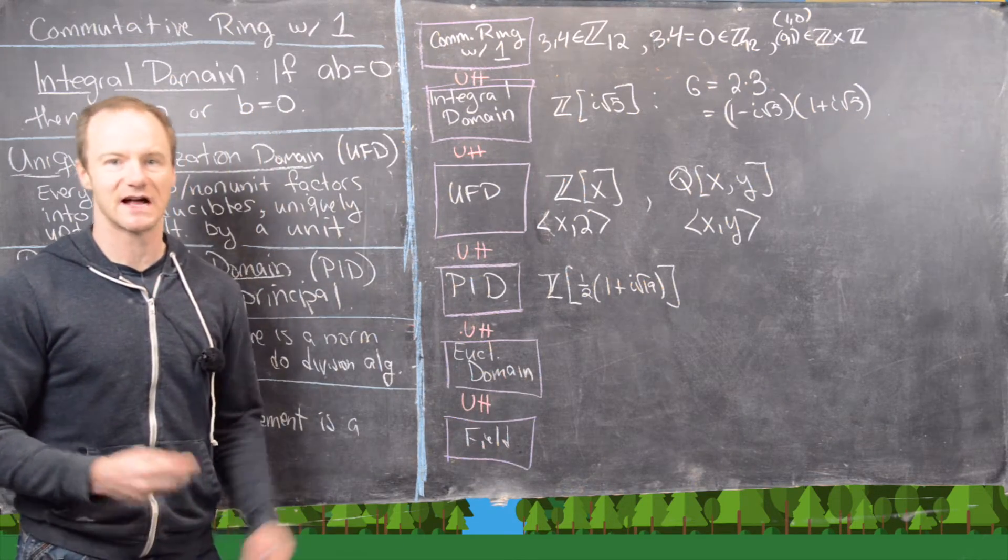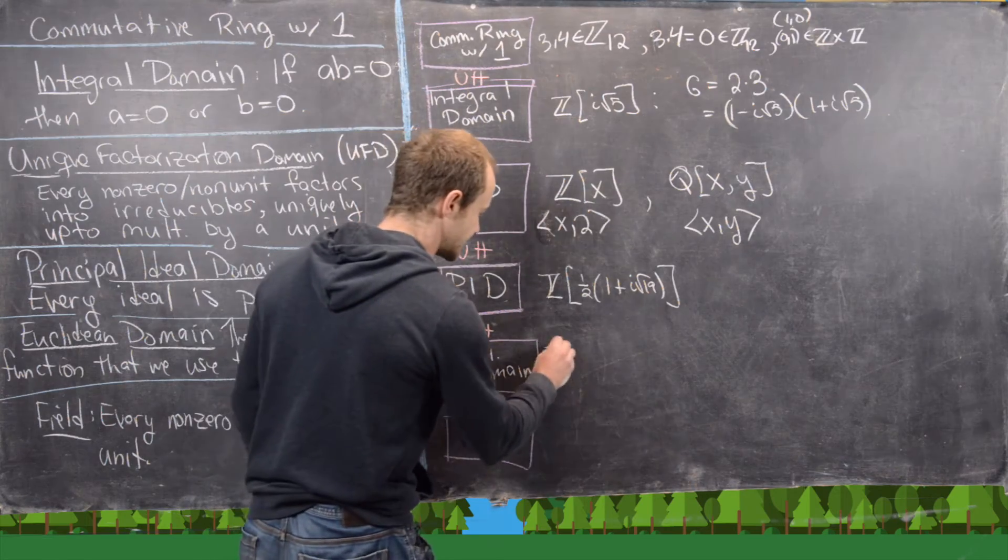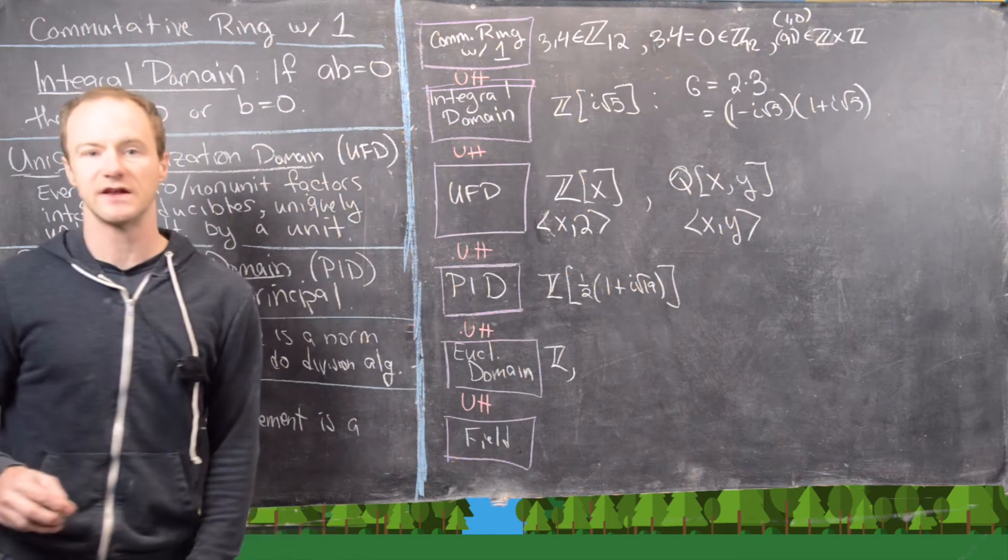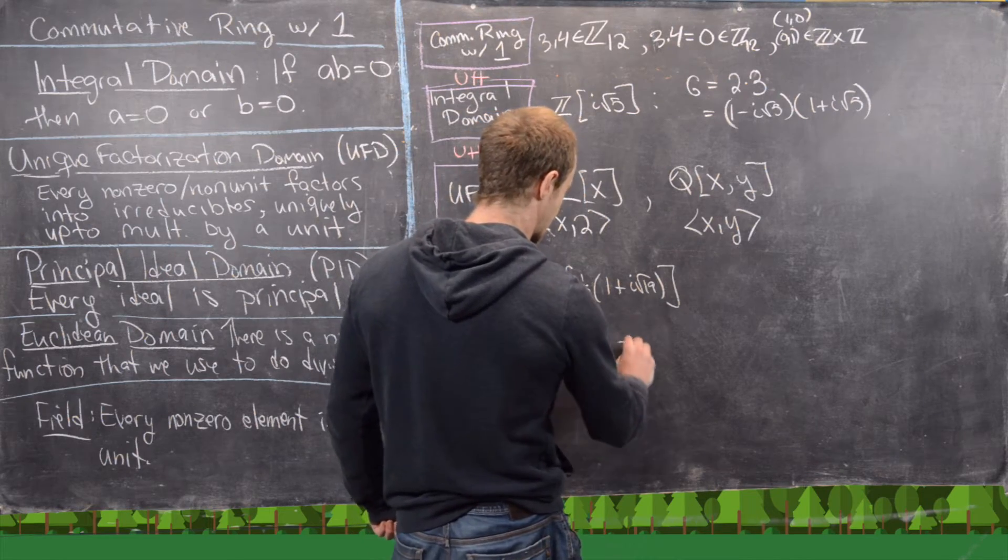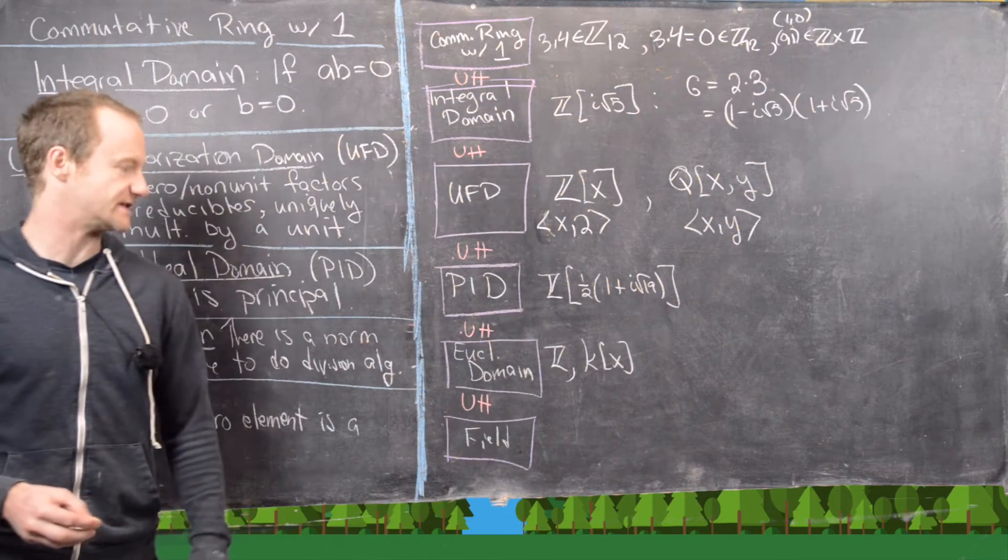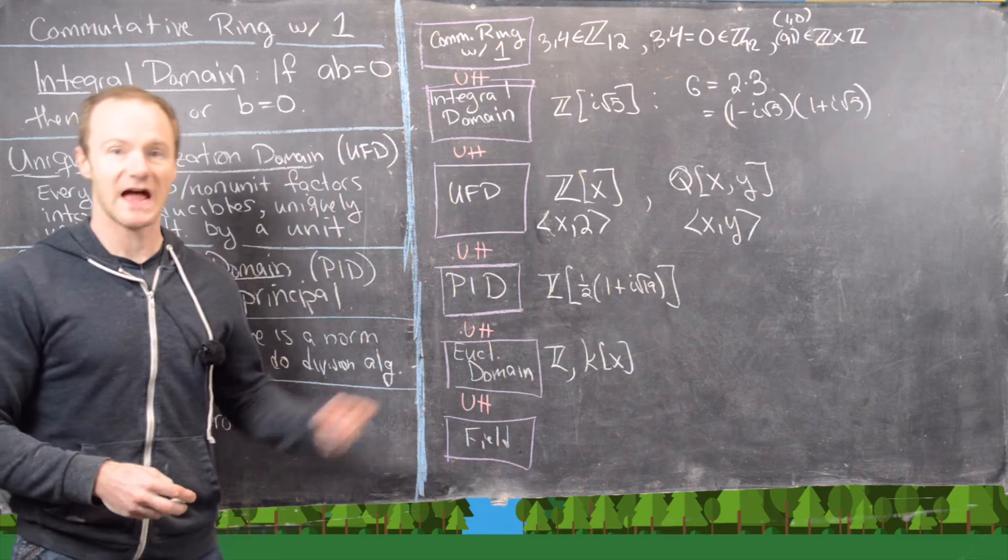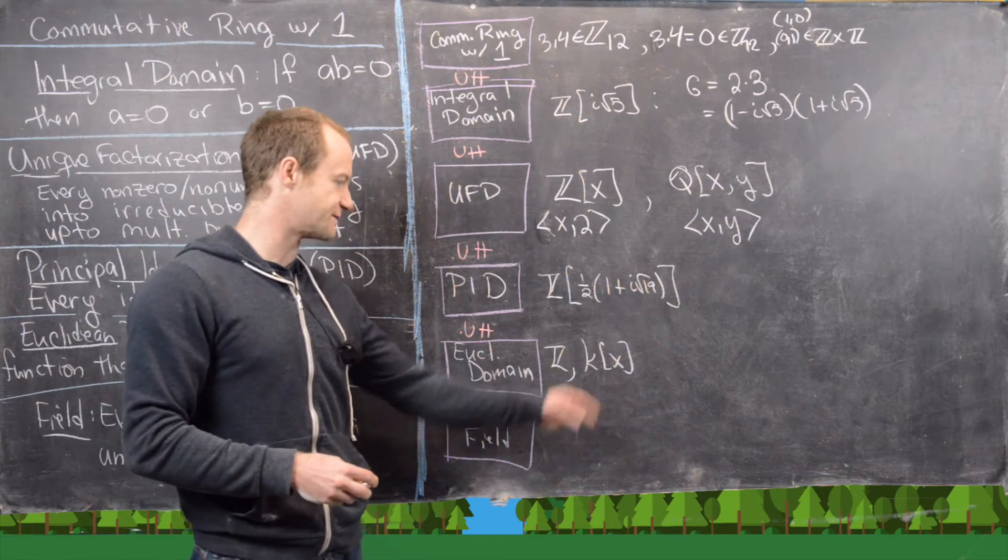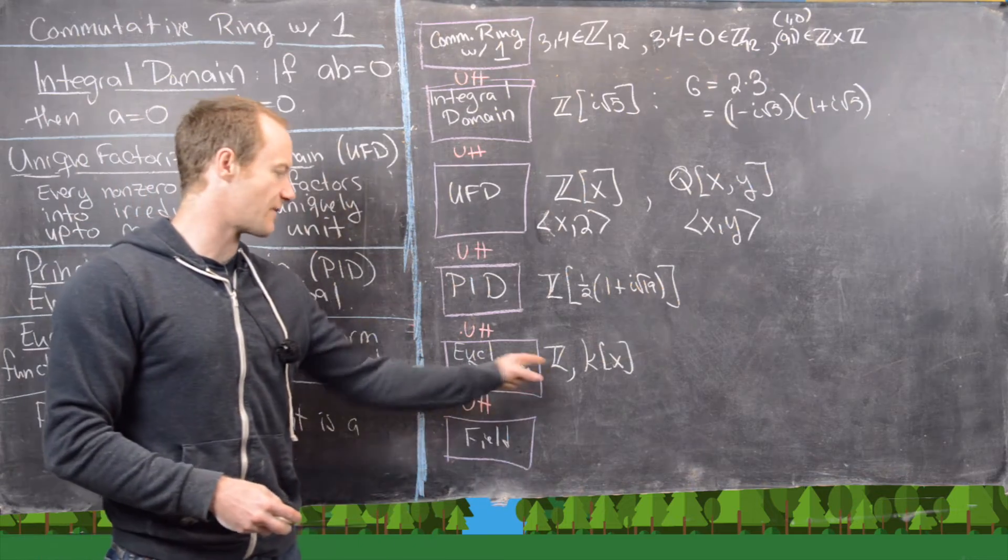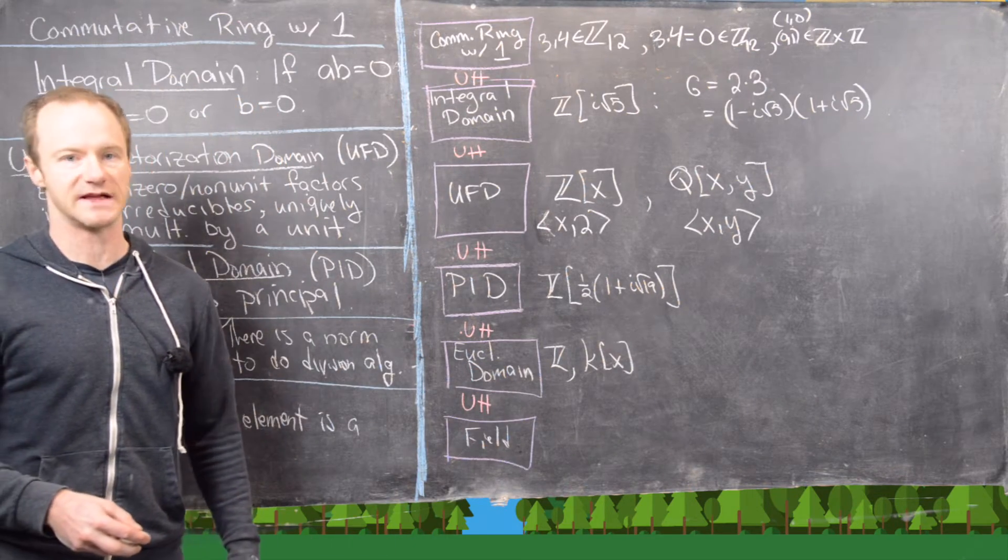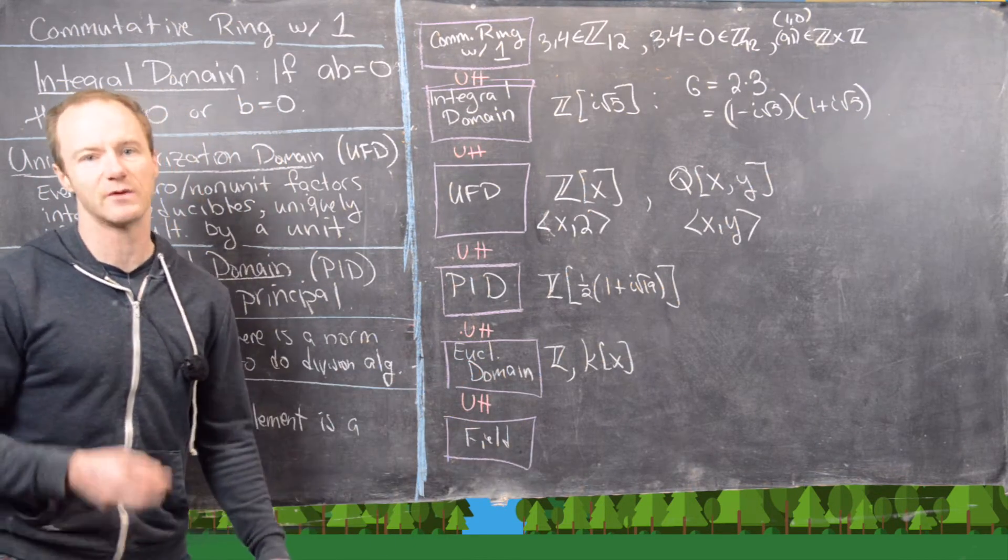Now we need a Euclidean domain that's not a field, but there are tons of those. So Z is a Euclidean domain. And then K adjoined X, where K is any field, is a Euclidean domain. In fact, there's lots of similarities between Z and K adjoined X. And all of those similarities really come from the fact that they're both Euclidean domains. And now down here at the bottom, we have some fields.